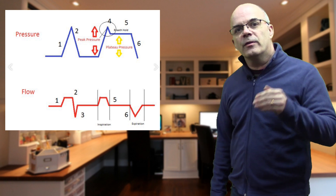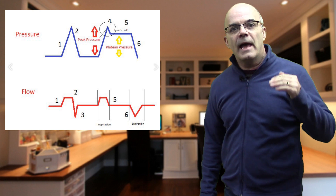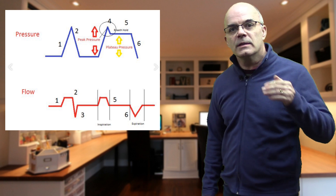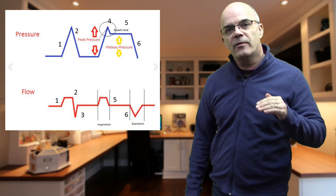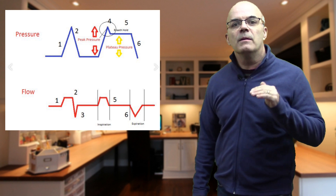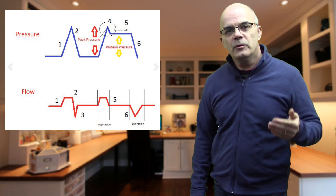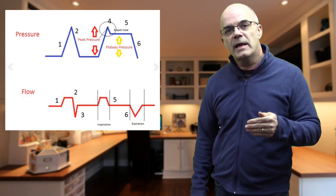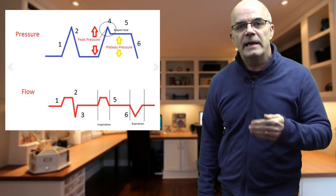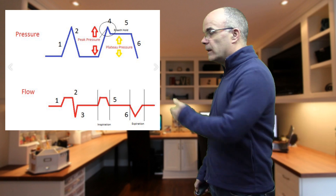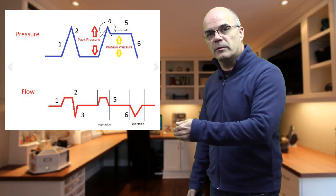The peak pressure is the maximum pressure in the proximal airway at the end of inspiration — we can see this at point four. At point five, we've instigated a breath hold, which can easily be done by most modern ventilators through a simple press of a button. This is the equivalent of occluding the endotracheal tube at the end of an inspiration. When you do so, the pressure equalizes between the tube and the alveoli, so consequently plateau pressure is a surrogate for end-inspiratory alveolar pressure.